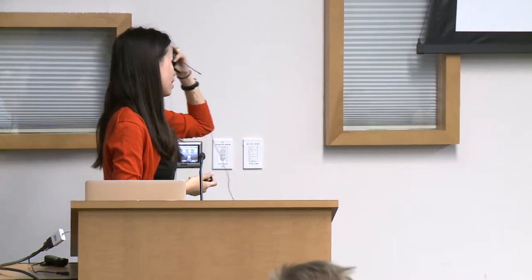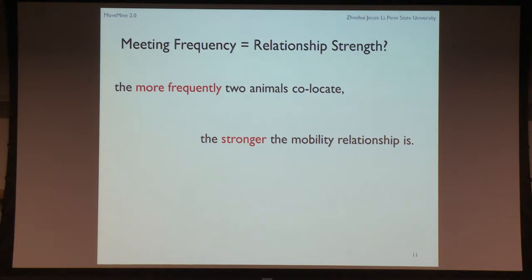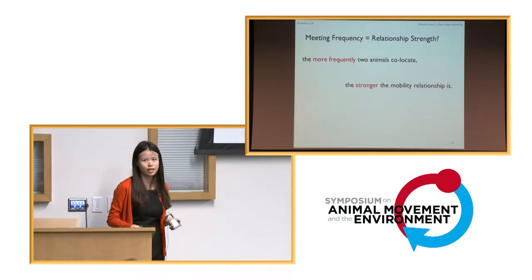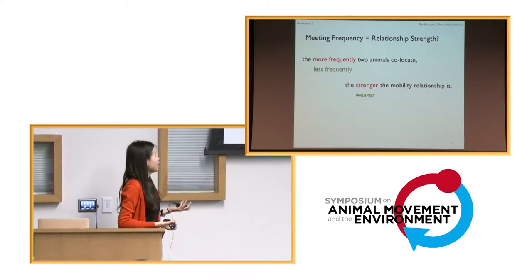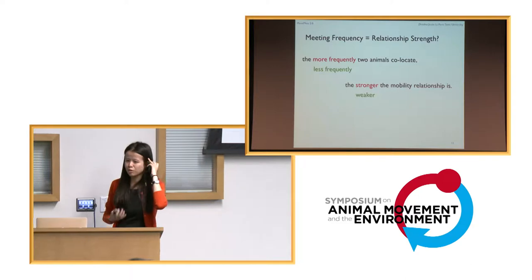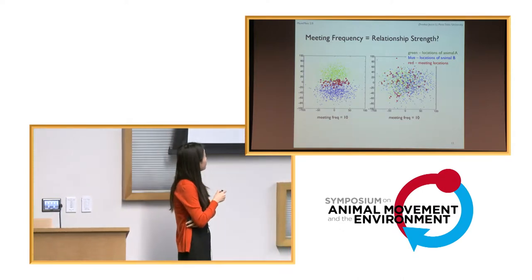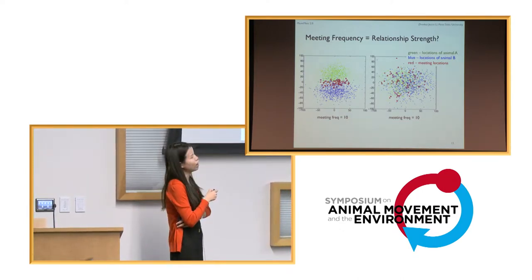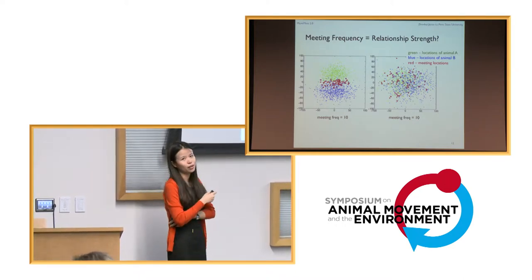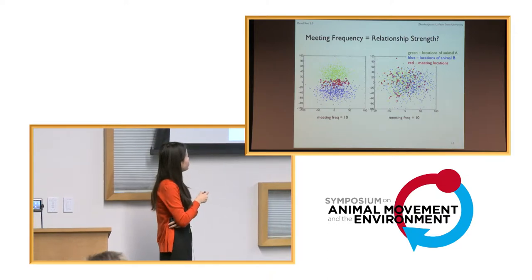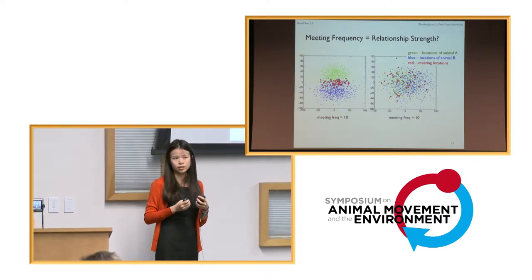We questioned whether meeting frequency alone is really the measure we want. If you say frequency equals relationship strength, you're saying the more frequently two animals co-locate, the stronger the relationship. But we came up with a counterexample. Say green is animal A and blue is animal B, and the red dots in between are places they co-locate — meeting events. Let's say they meet 10 times.